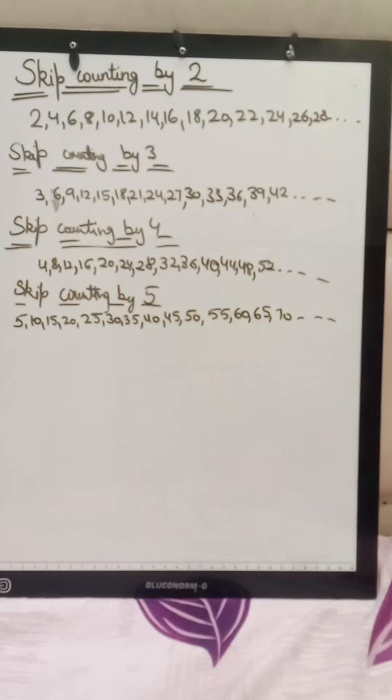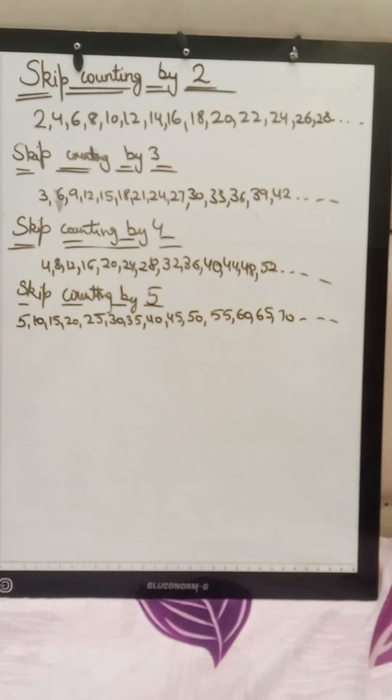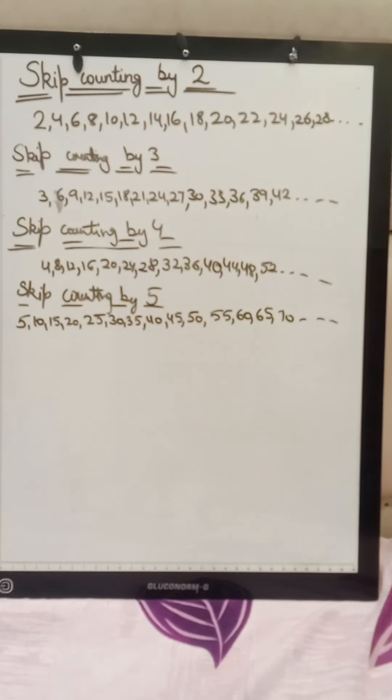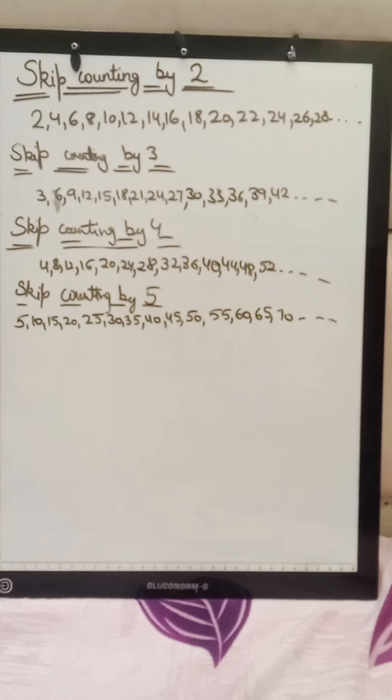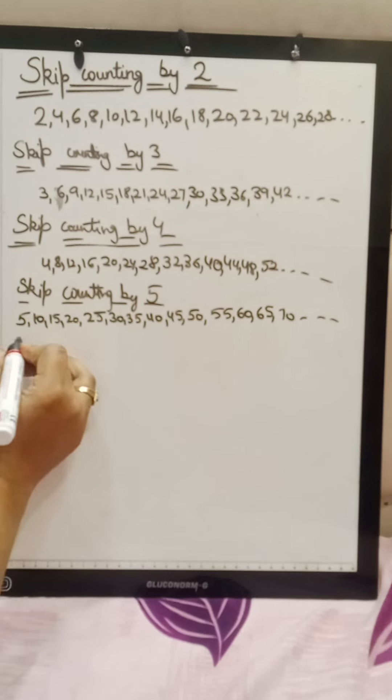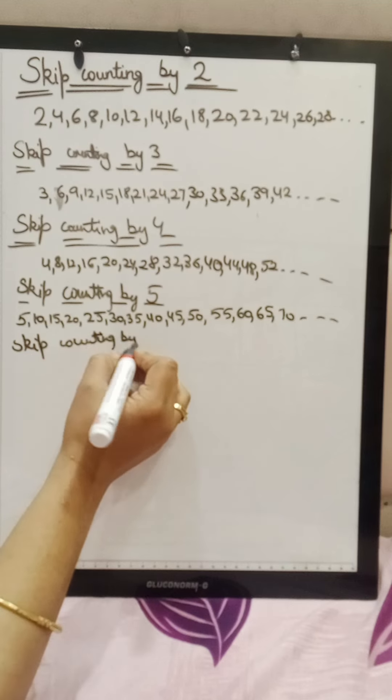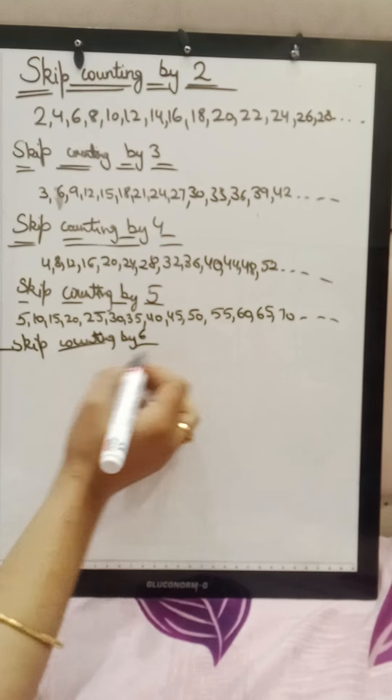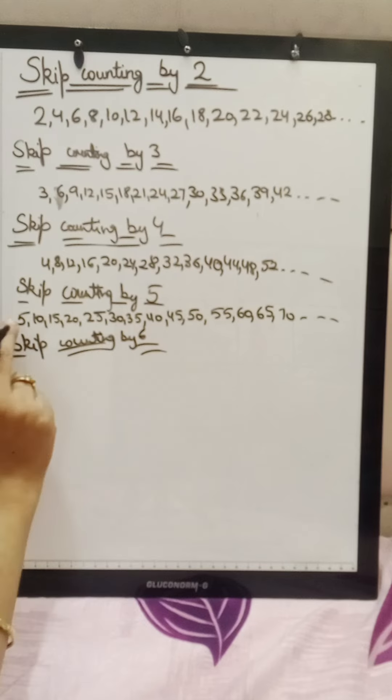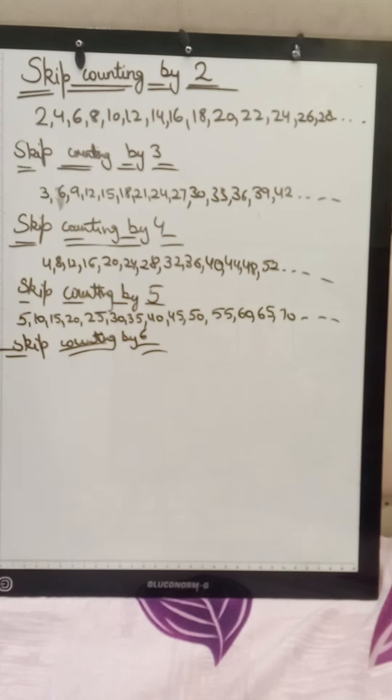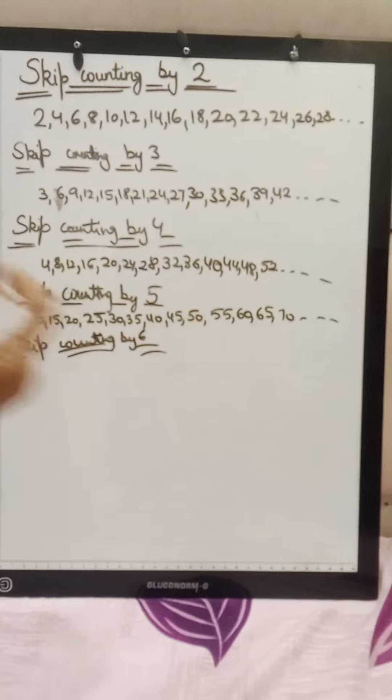So these are the skip counting of 2, 3, 4, 5. In this way our skip counting will continue for all the others also. Like skip counting by 6, we will keep adding 6, 7, 8, 10 basically. Now let's see skip counting by 6. Here you see one thing, your table will also be learned very easily. 5, 10, 15. This is the table of 5. This is the table of 4. We are adding, the tables are being formed.